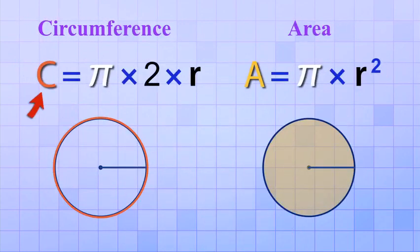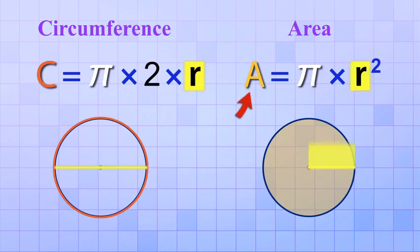To find the circumference, you take the radius and double it. Then you multiply by Pi to get the final answer. But for area, you don't double the radius, you square it. And that's a very important difference.